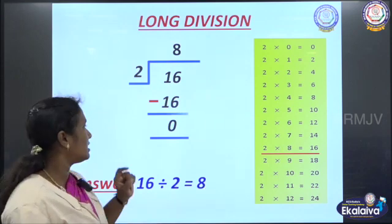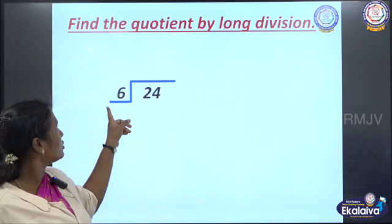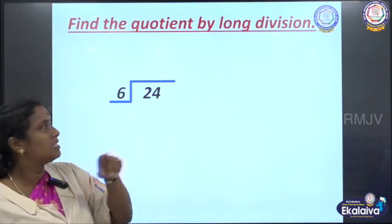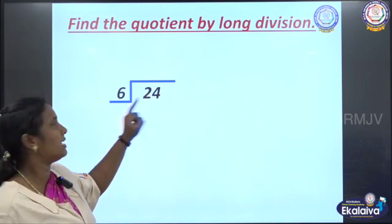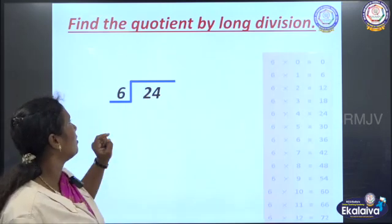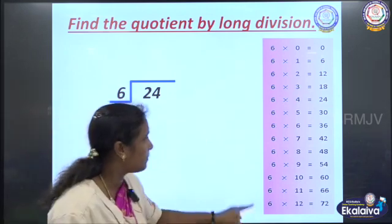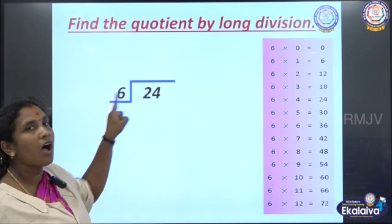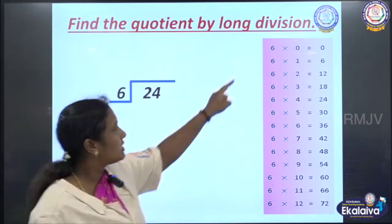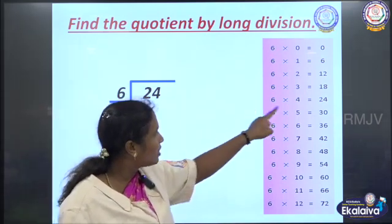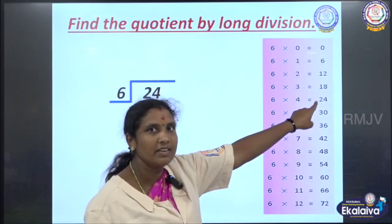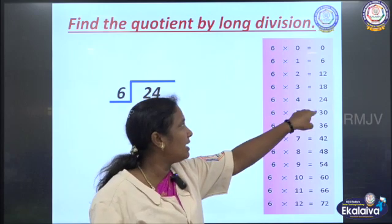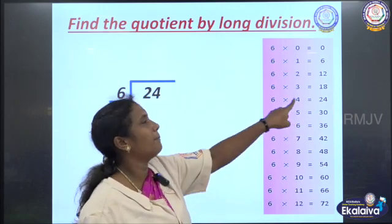Let us see one more example. Our question is 24 divided by 6. For this, we have to write the 6 times table. Next, we have to find how many times 6 is going to come in 24. Check the table — where is 24? We have 24 here. 6 fours are 24, so in 24, 6 is coming 4 times.